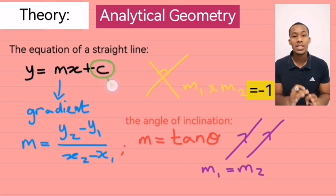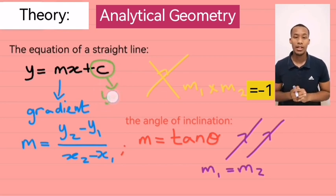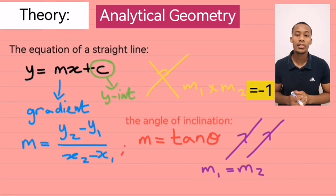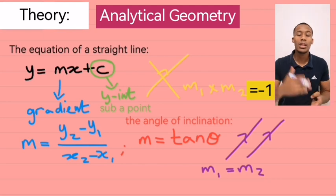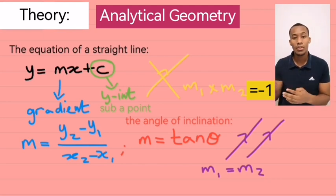Then we come to c. Now, c is the y-intercept of the line. And it's pretty simple to calculate c. You just substitute any point on the line, but only after you've found the gradient. Then you substitute a point to solve c.